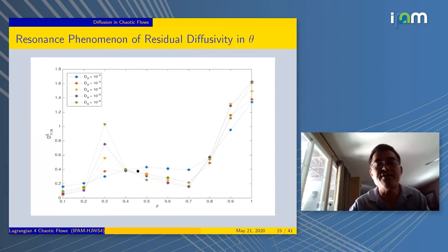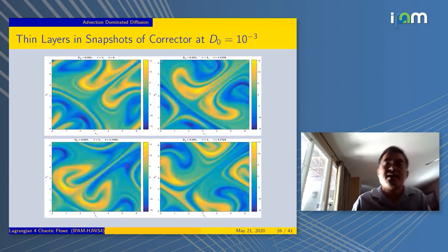More interestingly, this D_E as a function of θ is not a monotone function. It has some peaks. At certain θ, you can get a peak and other θ, you can get a valley. But overall, as θ increases, you get more enhancement over here at θ equals one. This is what we call the resonance phenomenon.